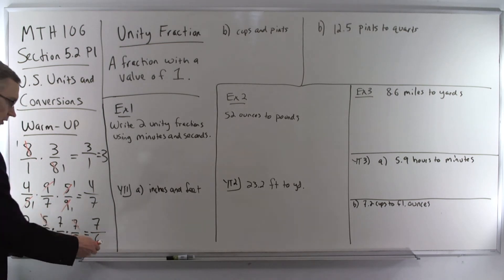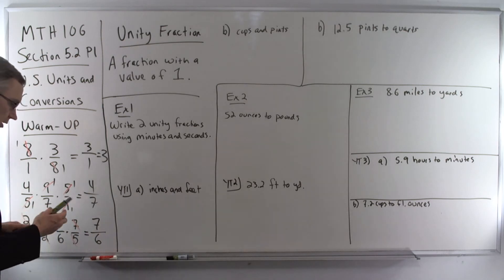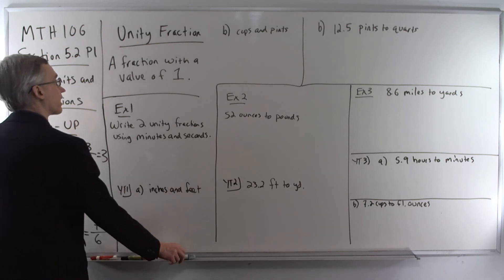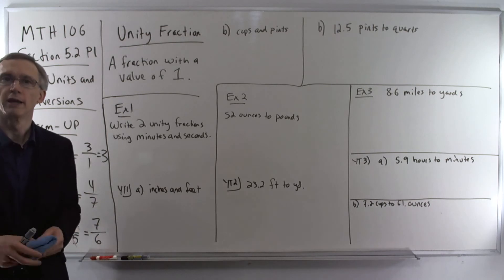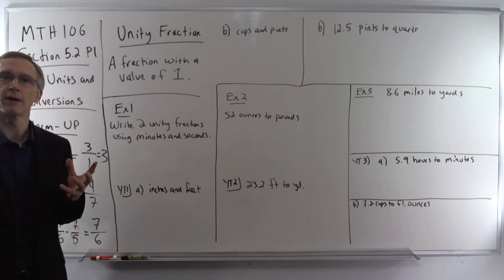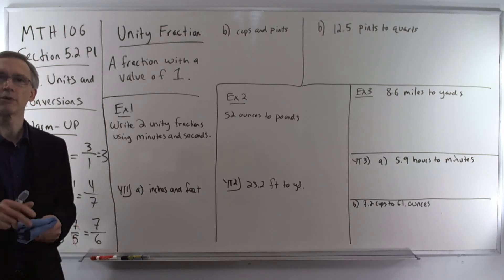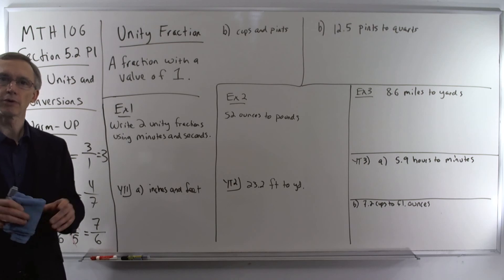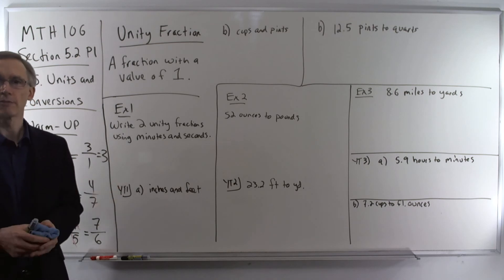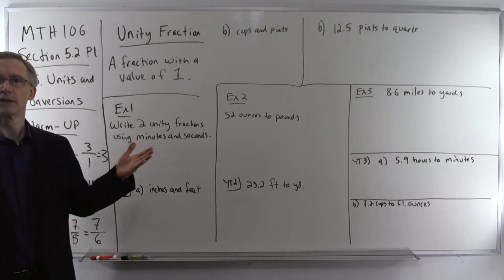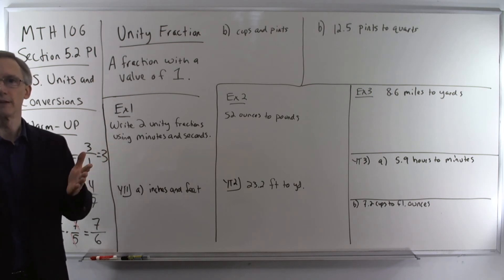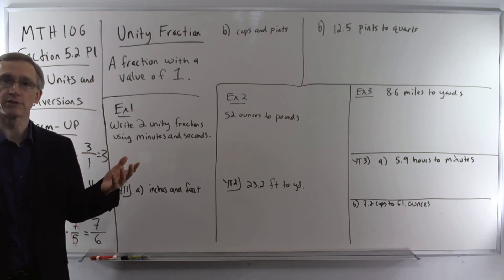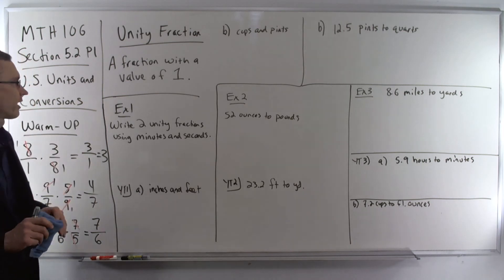Now in order to convert units, we're going to be using what's known as unity fractions. These are fractions with a value of 1. This is important because when we multiply by fractions, we don't want to change the value — we only want to change the units. So if you're measuring something and it's 36 inches, well that's 3 feet. It's the same distance, we're just measuring in two different units.